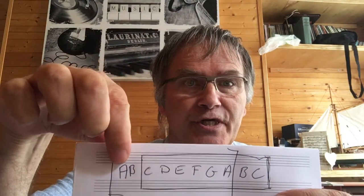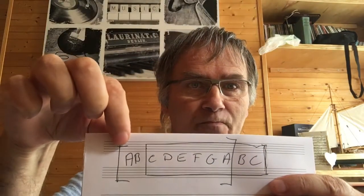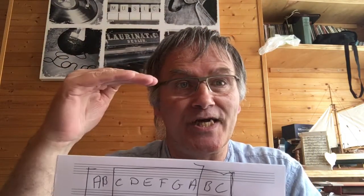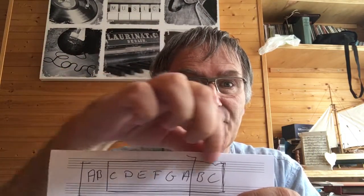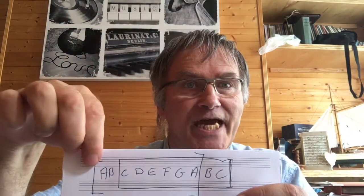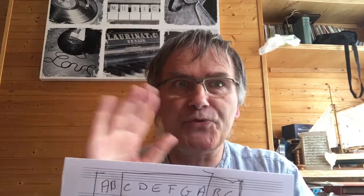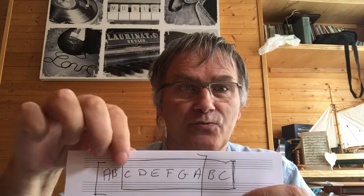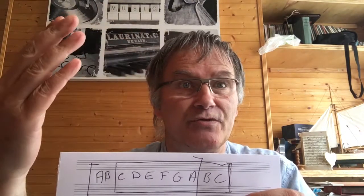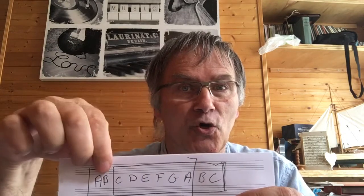So there's the major key: C, D, E, F, G, A, B, C. Now we're going to start two notes earlier: A, B, C, D, E, F, G, A. That's why it's called a relative minor key. So C major — the relative minor key to C major is A minor. We play the same notes as in C major only now we start and finish on an A.